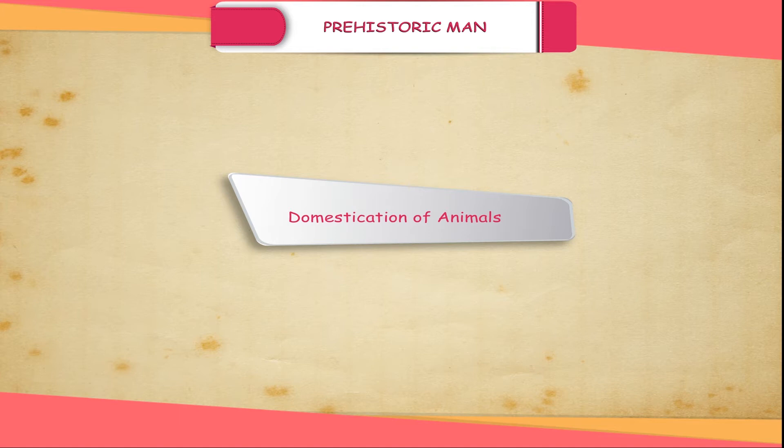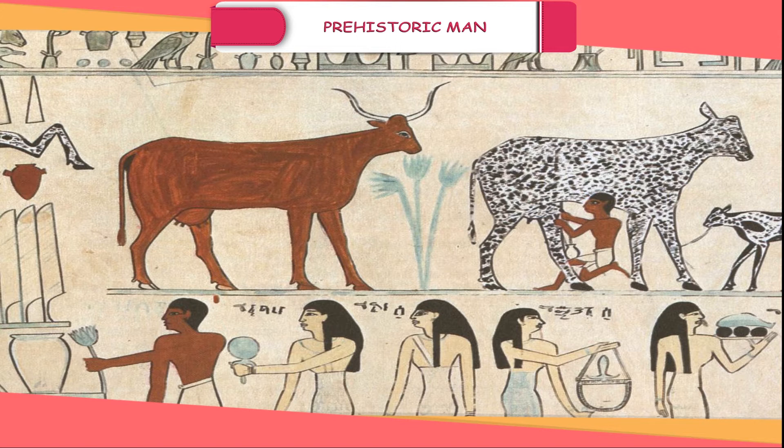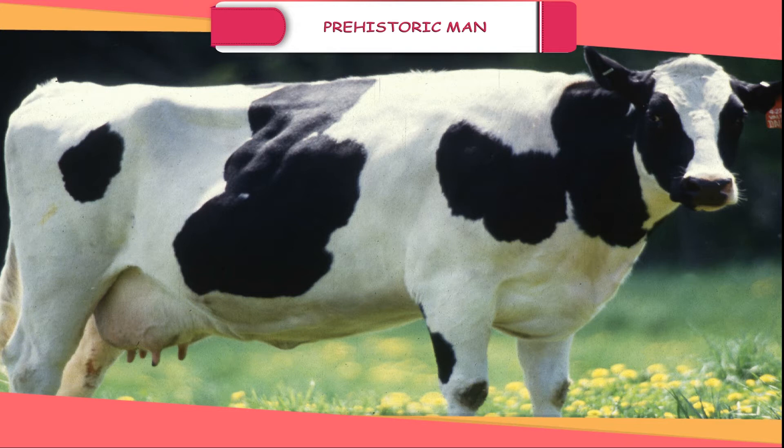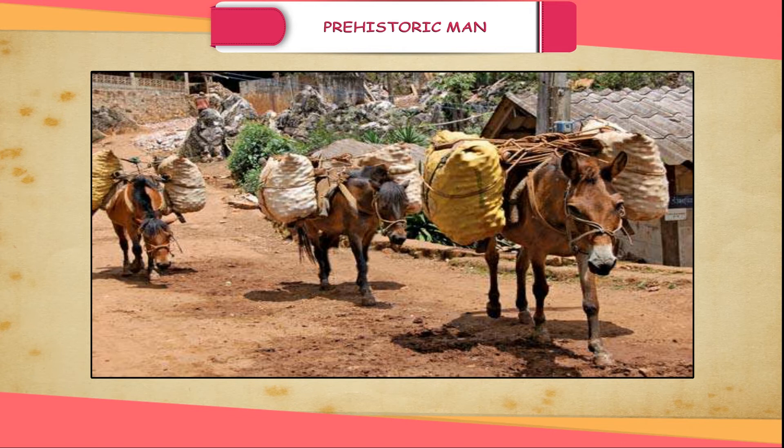Animals that could be kept alive on grass and leaves were domesticated for specific purposes — such as goats and cows for milk, sheep for wool, oxen for cultivation, and donkeys and horses for transportation and carrying loads.